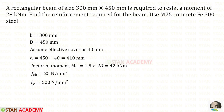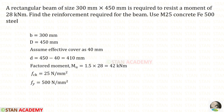For the next problem, a rectangular beam has an overall depth of 450 mm. Assuming an effective cover of 40 mm, the effective depth D = 450 − 40 = 410 mm. The working moment is 28 kNm, which must be converted to the factored moment by multiplying by 1.5, giving 42 kNm. FCK = 25, FY = 500, and we need to find the reinforcement.